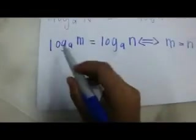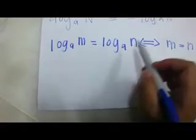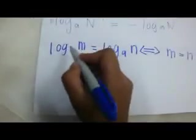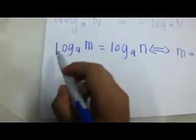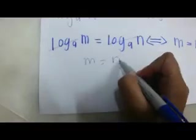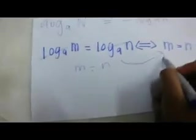And the last properties is log base A of M is equal to log base A of N if and only if M is equal to N. You can see the bersamaan. So, you can just cancel the log and you will get M is equal to N. So, it is same as this. That's all from me.